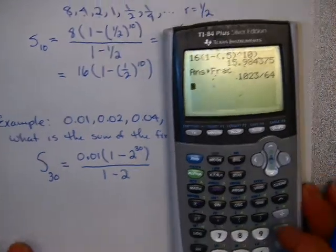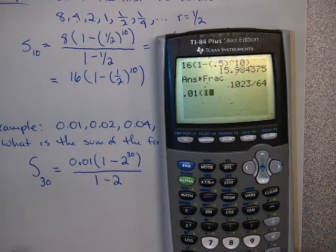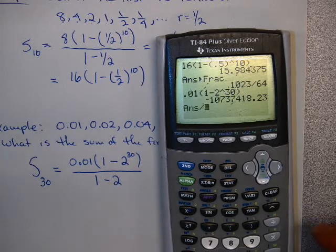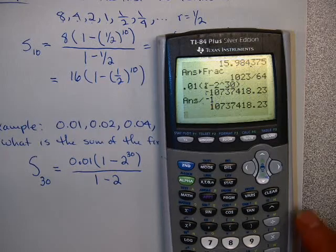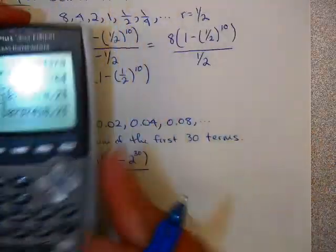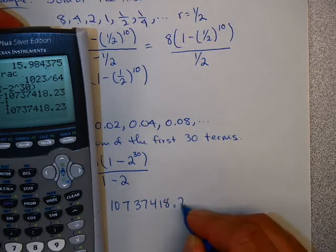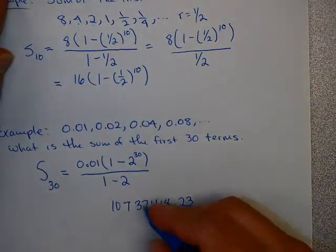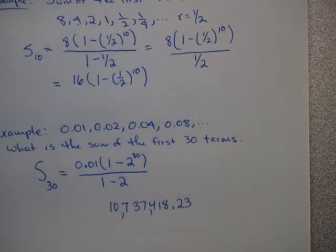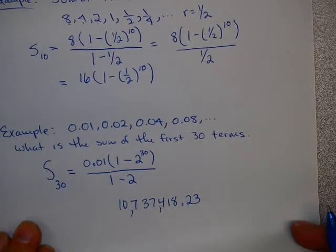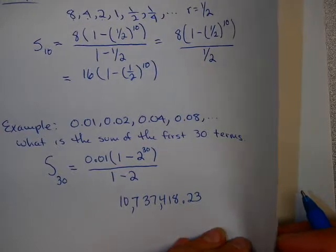Let's take a look at what that is. 0.01 times quantity (1 minus 2 raised to the 30th power) divided by (1 minus the common ratio, which is negative 1), gives me this very large number. This number is 10,737,418.23 cents. That's a nice amount of sum for 30 days' work. So if you ever offered one penny and then to double your salary every day, you should definitely keep it as long as you can keep that job.